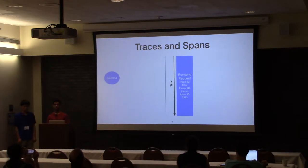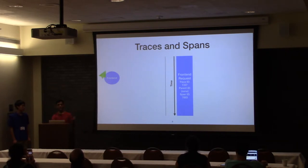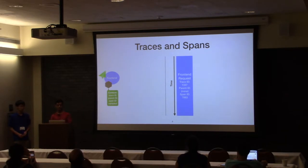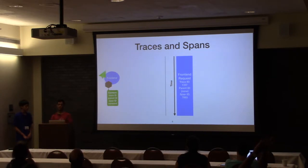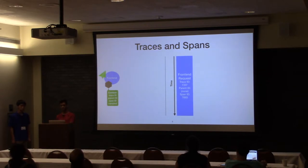Now let's talk in more depth about how tracing actually works. The goal is to follow an individual request as it propagates through the entire distributed system. You start with a front-end request. The first step is to generate a context for this request. That includes a trace ID, a parent ID, a span ID, and whether or not this is sampled. The trace ID identifies this individual request throughout the entire system — it's a unique identifier for this request. The parent and span ID together are used to construct the causal relationship between a bunch of different services.